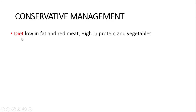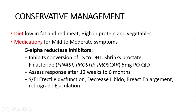Conservative management includes diet modification and medications. Diet should be low in fat and red meat and high in proteins and vegetables, as propounded from data of the prostate cancer prevention trial. Medications are necessary for mild to moderate symptoms and include 5-alpha reductase inhibitors and alpha blockers.